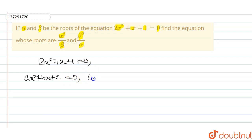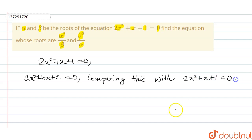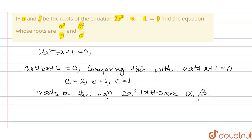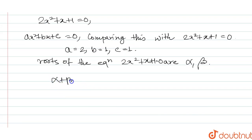Comparing this with ax squared plus bx plus c equals to 0, we get a equals to 2, b equals to 1, c equals to 1. Now, by Vieta's formulas: alpha plus beta equals to minus b by a, which is minus 1 by 2. And alpha times beta equals to c by a, which is 1 by 2.